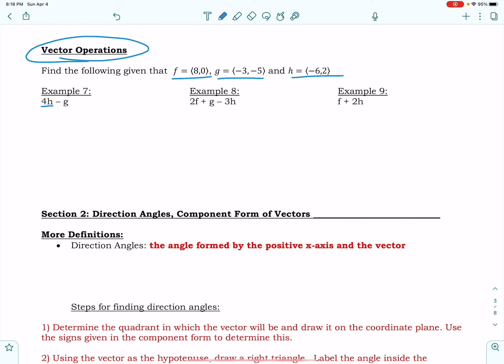So I've got 4 times H minus G, so that means 4 times vector H minus vector G. Okay, so the key here is that you've got to keep your X values together and you've got to keep your Y values together.